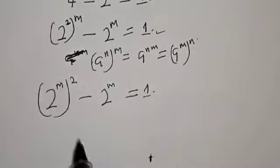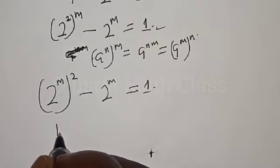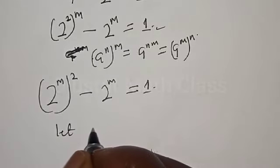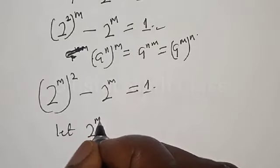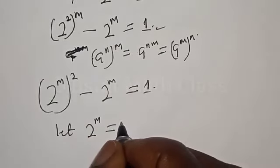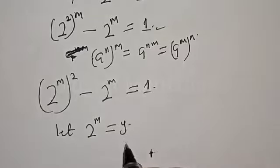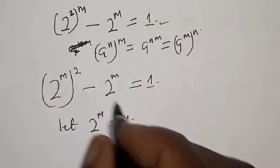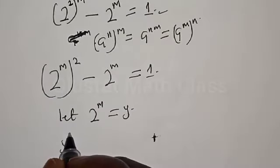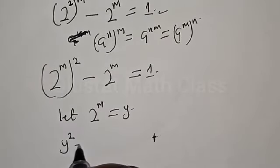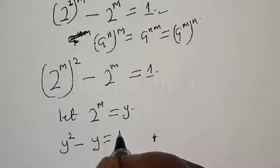Then, let 2 raised to power m equal to y. Therefore, we have y squared minus y equal to 1.